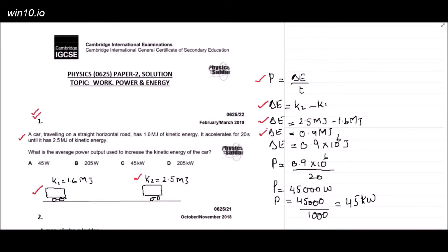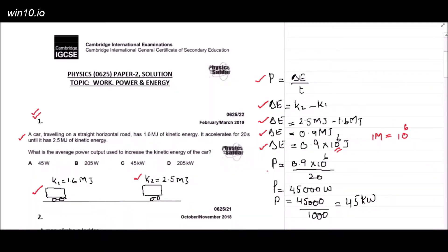But look — in this question we have time in seconds, so the change in energy must be in joules. So in this step we change megajoules to joules: 1 mega equals 10 to the power 6. So we get 0.9 × 10⁶ joules. Now the equation is ready: power equals 0.9 × 10⁶ over 20. Divide the numbers.